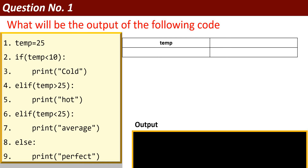Let's start. Question number one: what will be the output of the following code? The code is: temp = 25, if temp < 10 print 'cold', elif temp > 25 print 'hot', elif temp < 25 print 'average', else print 'perfect'. Here I have used the if, elif, and else concept. Let's see how it will work.